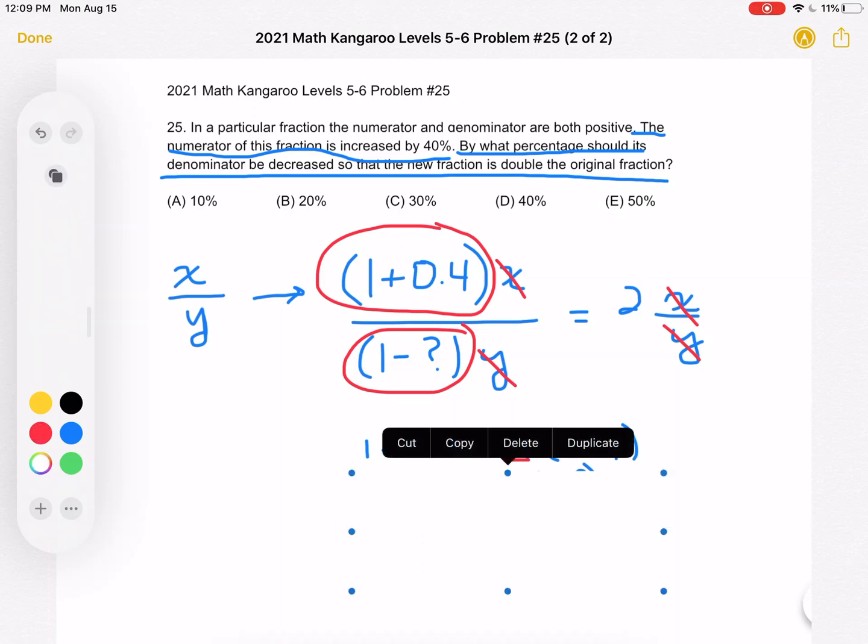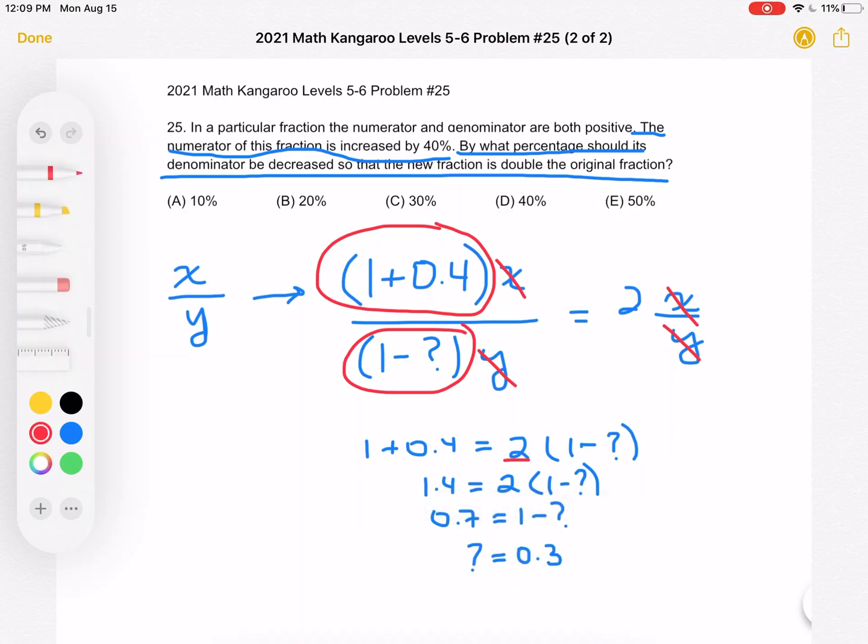So we can combine the 1 plus 0.4 to get 1.4 is equal to 2 times the quantity of 1 minus the question mark. Then divide by 2 to get 0.7 is equal to 1 minus the question mark. And then we can finally solve for the question mark and get the question mark is equal to 0.3.